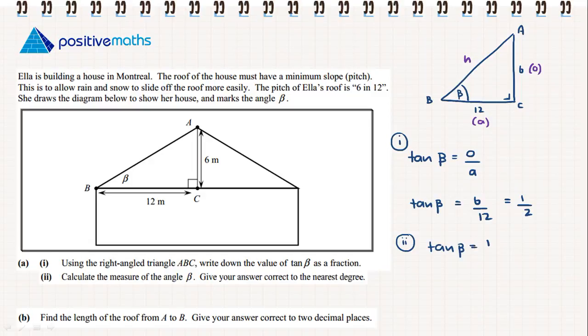So if we know that the tan of the angle is equal to a half, then we need to use our tan inverse to find the angle. So to the nearest degree, we will find that β is 27 degrees.